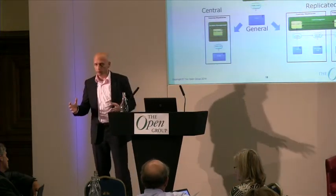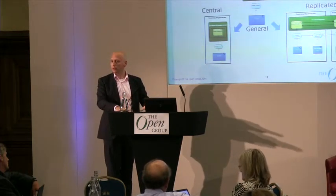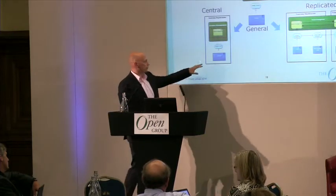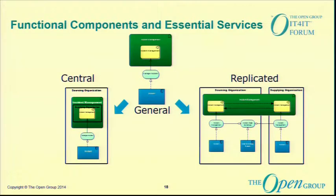Once we understand what we want to do, the next layer is how we go to the application layer. We use the term 'essential services' — services provided by the functional component to support the capability. In this case, for incident management, an essential service is 'manages an incident,' provided by an incident management functional component. In the central setup, it's one functional component. We show this again in ArchiMate notation with the organizational setup.